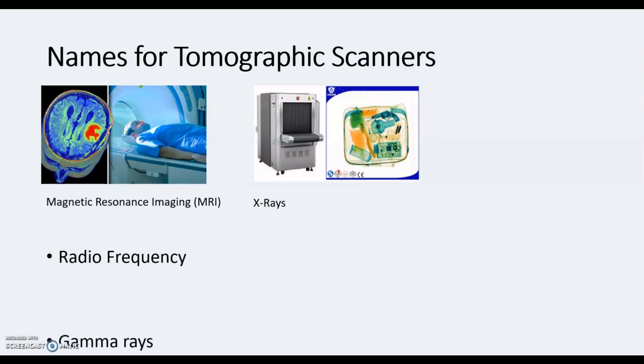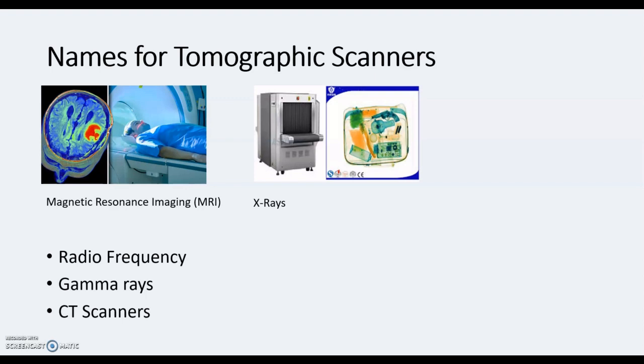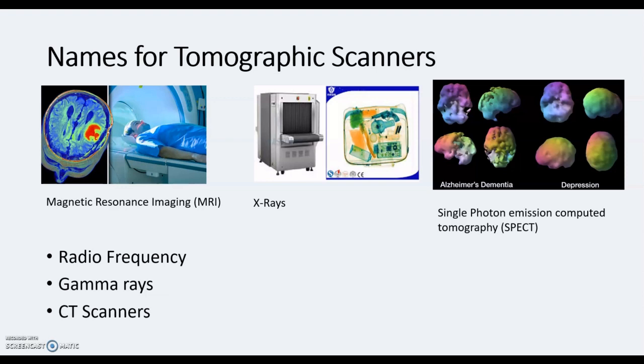Then we've got radio frequency and gamma rays, CT scanners as we've looked at, and my favorite — a single photon emission computed tomography, or SPECT. We don't know a huge amount about the human brain as it's so complex, but technology is helping us learn. I like the way it's built a representation of the human brain with Alzheimer's disease — an extremely cruel and debilitating condition — and also a representation of the brain for someone who suffers depression, another extremely cruel and debilitating mental illness, color-coordinated to highlight differences.